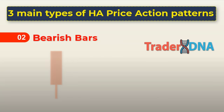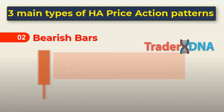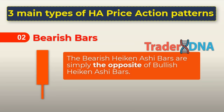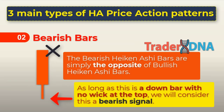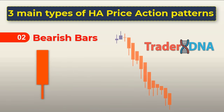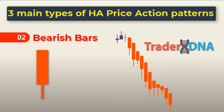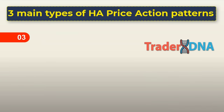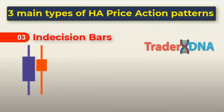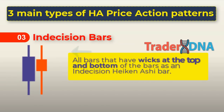Second, bearish Heiken Ashi bars. The bearish Heiken Ashi bars are simply the opposite of bullish Heiken Ashi bars. They have a wick at the bottom, but no wick at the top. As long as this is a down bar with no wick at the top, we will consider this a bearish signal. Third, indecision Heiken Ashi bars. I've categorized all bars that have wicks at the top and bottom as an indecision Heiken Ashi bar. So regardless of whether the bar color is bullish or bearish, as long as there are wicks on both sides, we consider this an indecision bar.